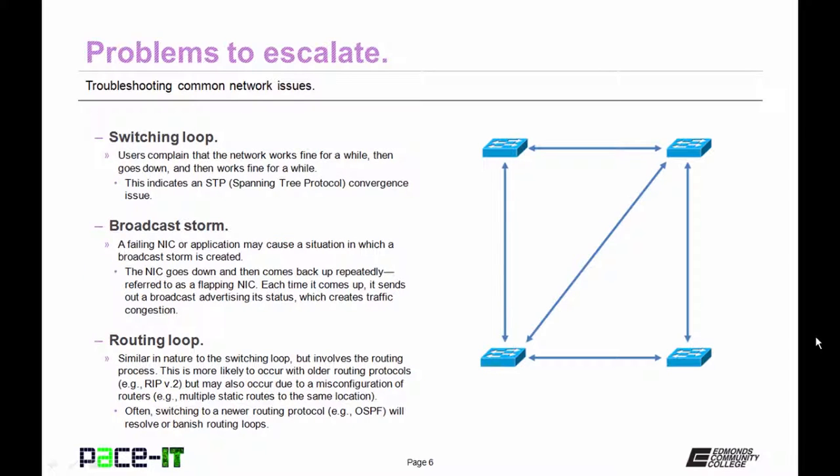The first of those problems is the switching loop. Users complain that the network works fine for a while and then goes down and then works fine for a while and then goes down. This indicates a spanning tree protocol convergence issue or a switching loop. In either case, this is beyond the entry-level technician's capabilities and should be escalated as soon as possible.